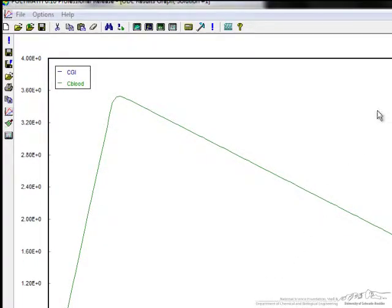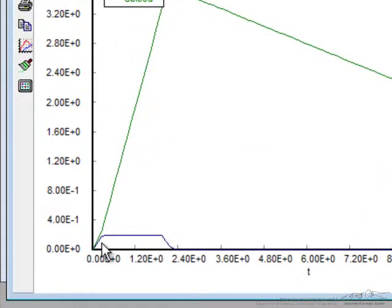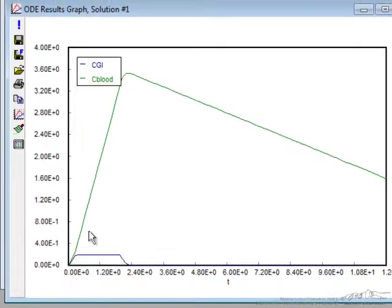Let's select that we want a graph rather than a report. It now has integrated and displayed a graph. If I hit the button that converts it so I can see all the windows, this is the concentration in the GI tract. It quickly gets up to almost a constant value before dropping off. This is the concentration in the bloodstream.